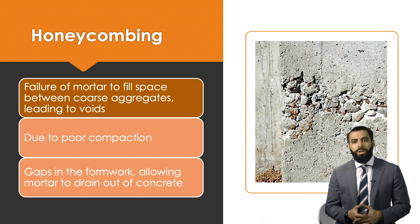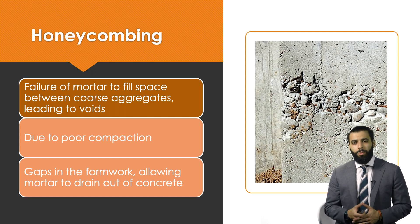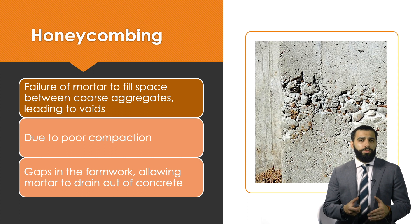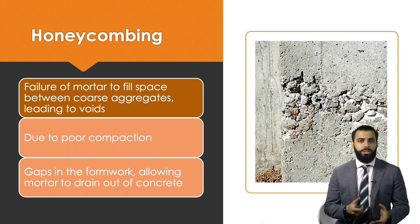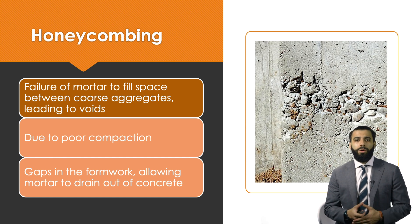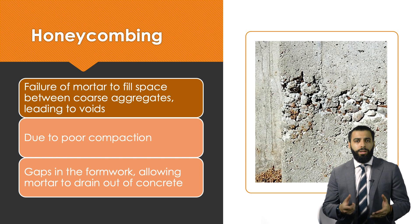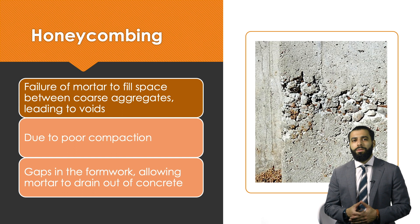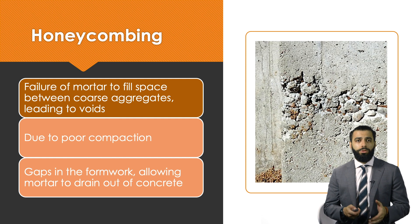Honeycombing is another concrete defect visible in many concrete members, as shown in the image. It occurs when there is a failure of the mortar to fill the spaces between the coarse aggregates, leading to visible voids. The most common causes are poor compaction — the concrete needs to be vibrated after pouring, so poor vibration leads to honeycombing — and additionally, gaps in the formwork can also cause this issue.